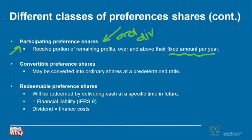Convertible preference shares may be converted into ordinary shares at a predetermined ratio. You could, for instance, convert two preference shares — for every two preference shares, you get four ordinary shares, or whatever the ratio might be.